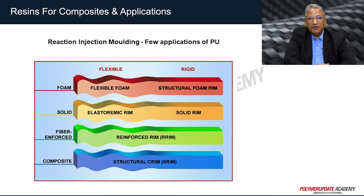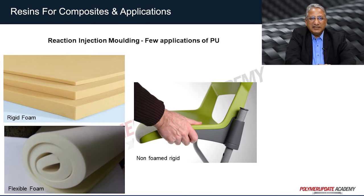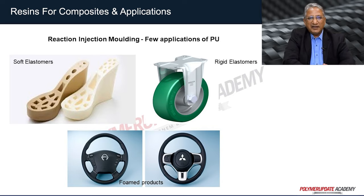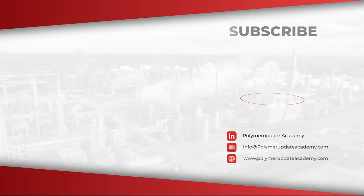PU resin is used to manufacture flexible as well as rigid products, and also for elastomeric and solid reaction injection molding applications. It is also used along with reinforcement for structural applications. Examples include rigid foam, flexible foam, and non-foam applications where rigidity is required. Additional polyurethane applications include soft and rigid elastomers, as well as foam products. With these slides, we end the discussion on applications of various resins for manufacturing composites. Thank you. Take care. Bye.